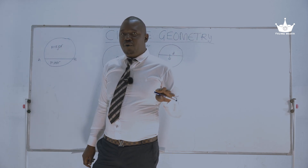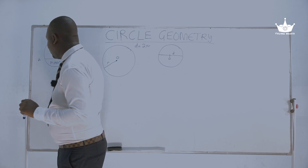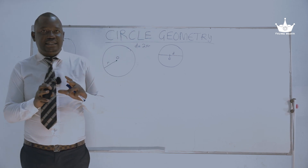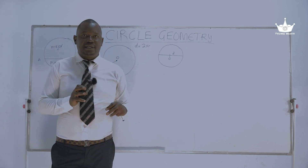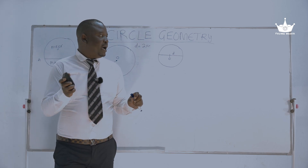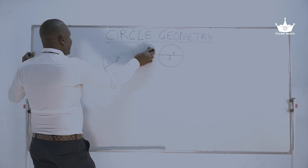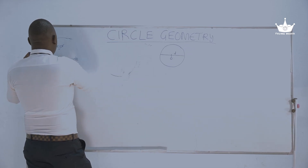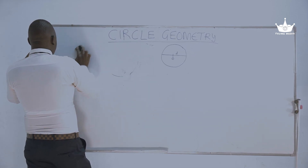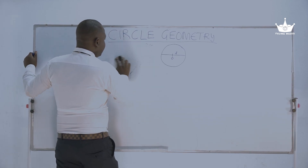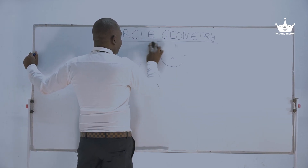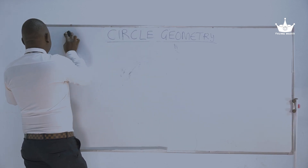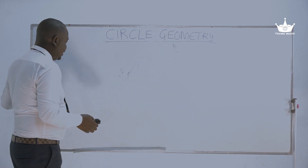Let us move on now to what are known as circle theorems. But before we look at circle theorems specifically, I'm going to be talking about what is known as angle subtension. Before you can understand circle theorems, you need to understand what is known as angle subtension.